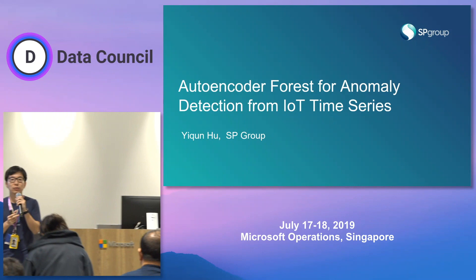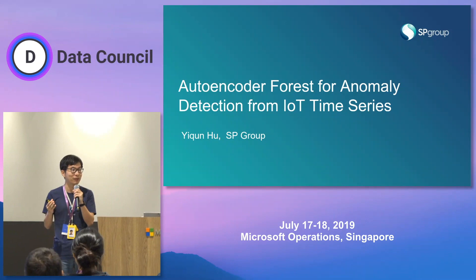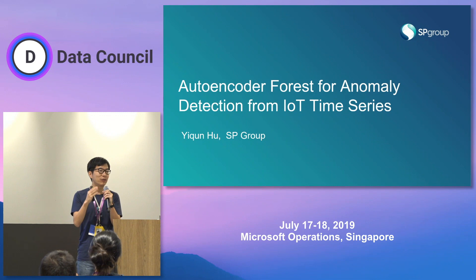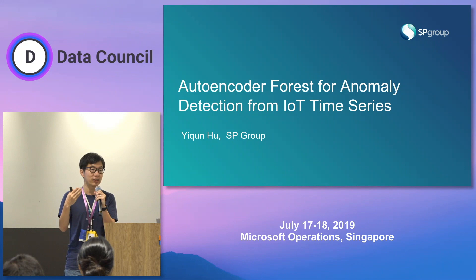Good afternoon, my name is Yijin. I'm currently running the data and AI section for SP Group. SP Group is the utility company in Singapore running the billing, metering, and certain repeating services for households and every single organization. We manage the transmission and distribution network for electricity and gas for Singapore.